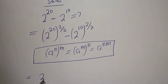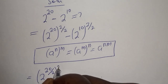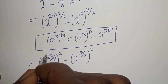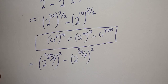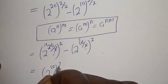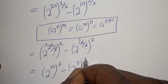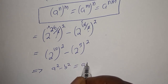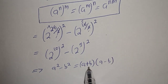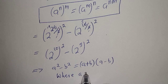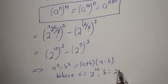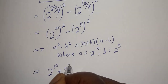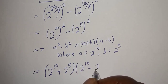This can be written as 2 raised to power 10 squared, minus 2 raised to power 5 squared. Now this is in the form of a perfect square. If you have a squared minus b squared, this equals (a + b)(a − b). Here a equals 2 raised to power 10, and b equals 2 raised to power 5. Substituting: (2 raised to power 10 plus 2 raised to power 5) multiplied by (2 raised to power 10 minus 2 raised to power 5).